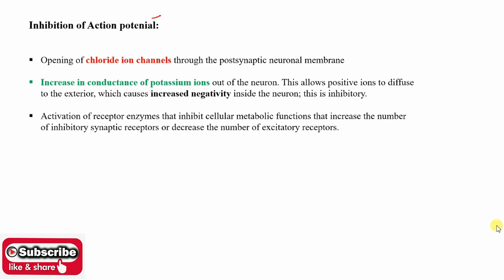Your potential difference is maintained at minus 70 millivolts. Which factors are involved in maintaining this? We discuss the first factor: chloride ion channels opening. Chloride ion channels — their concentration increases. Chloride ion channels present on the post-synaptic neuronal membrane open, causing chloride ion influx. The action potential is maintained at minus 70 millivolts.